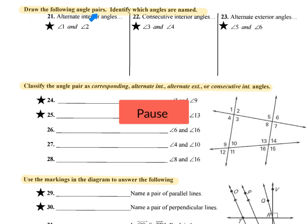In these three questions, they ask us to draw the following angle pairs and identify which angles are named. For question 21, they want us to draw alternate interior angles and label them angle one and angle two. We have to have a transversal — the line that cuts the two of them. Alternate interior angles have to be on different sides of the transversal and between the lines. So angle one goes up here and angle two goes on the bottom part, one on the left and two on the right.